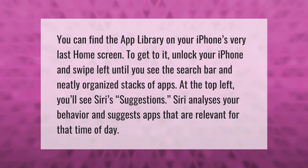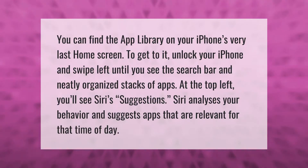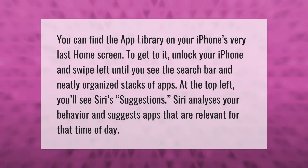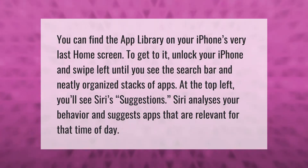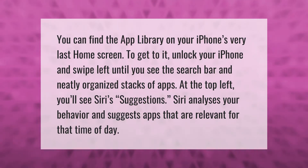You can find the App Library on your iPhone's very last home screen. To get to it, unlock your iPhone and swipe left until you see the search bar and neatly organized stacks of apps. At the top left, you'll see Siri's Suggestions — Siri analyzes your behavior and suggests apps that are relevant for that time of day.